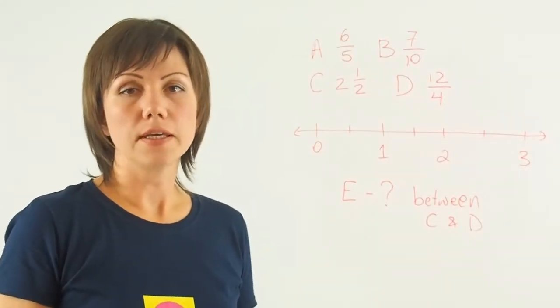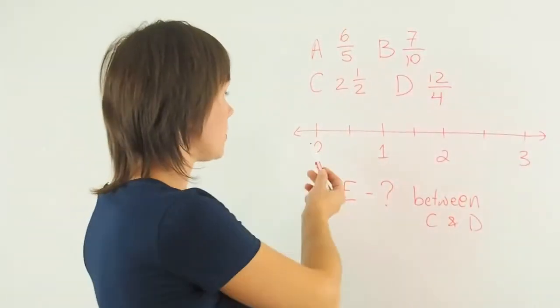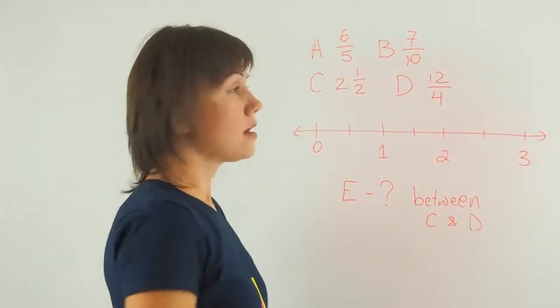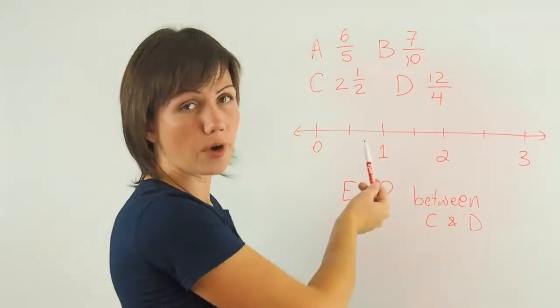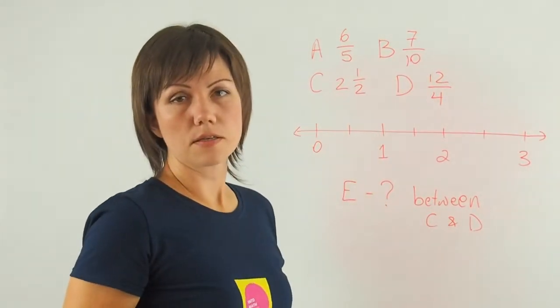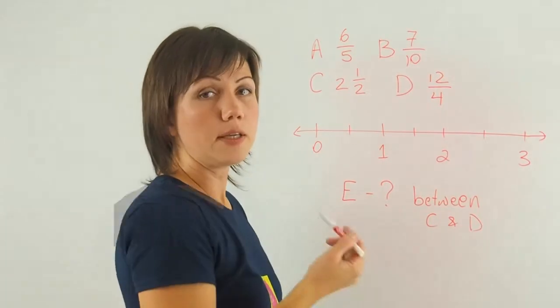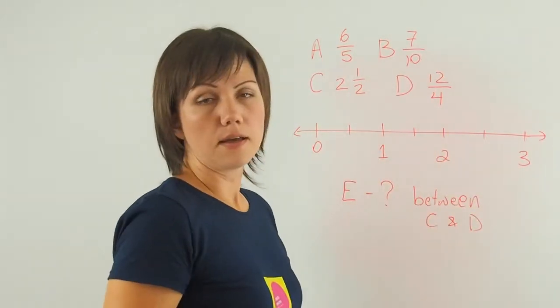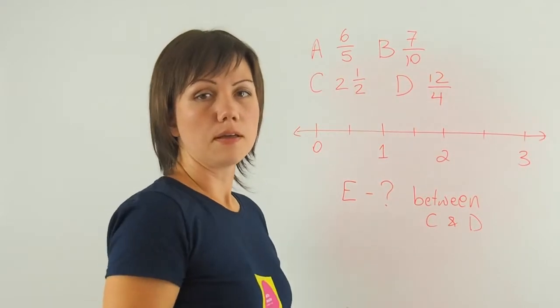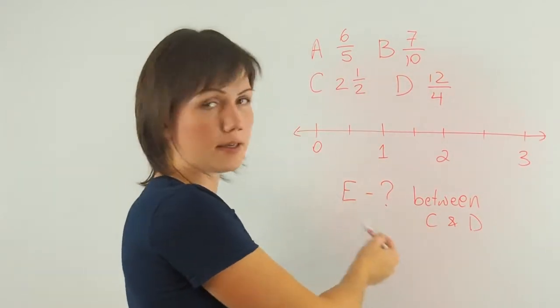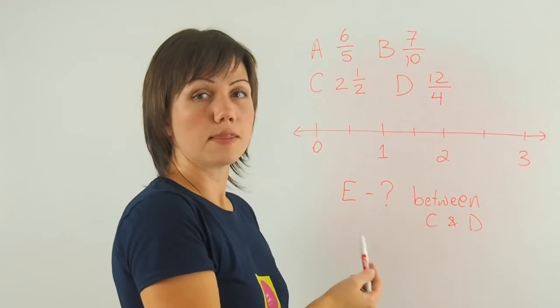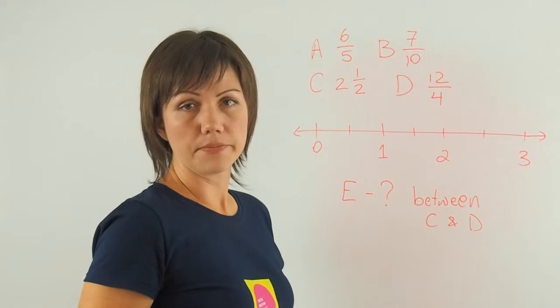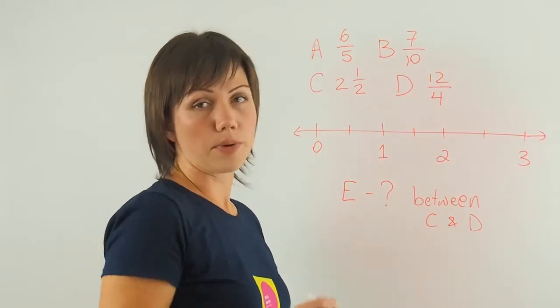In this question you're given a number line from 0 to 3, and then you're given four points represented as fractions or mixed numbers. We need to locate these points on a number line and then determine the value of point E such that it is located between points C and D. Let's start one by one.